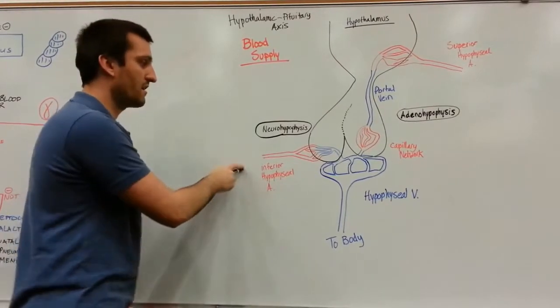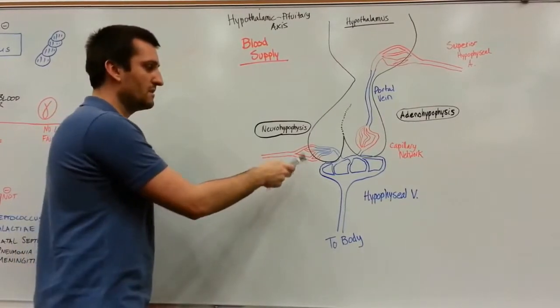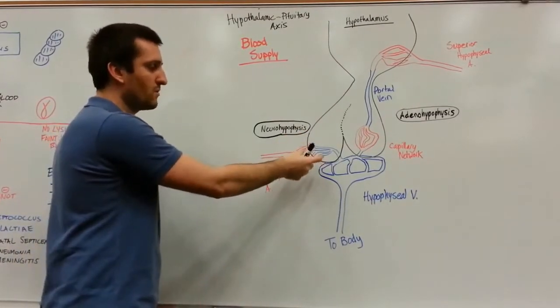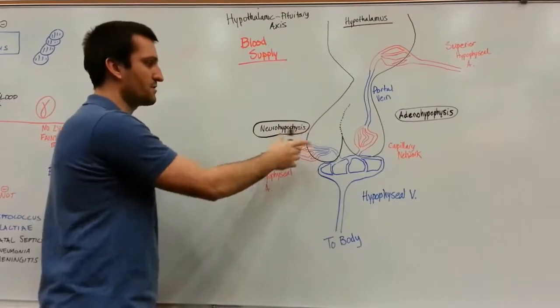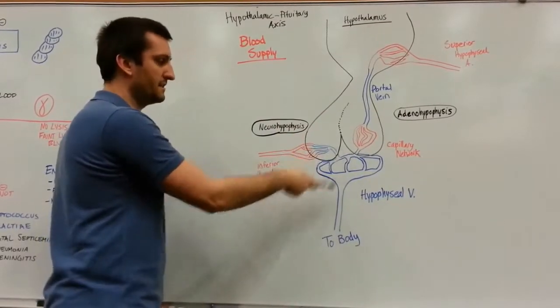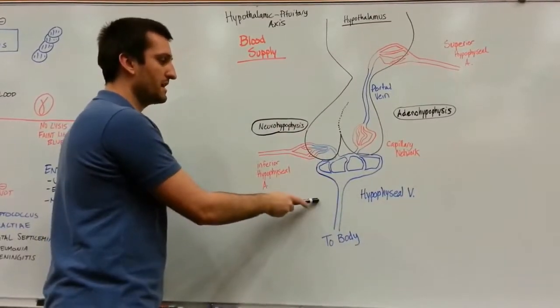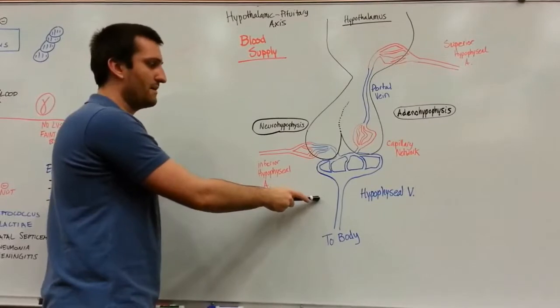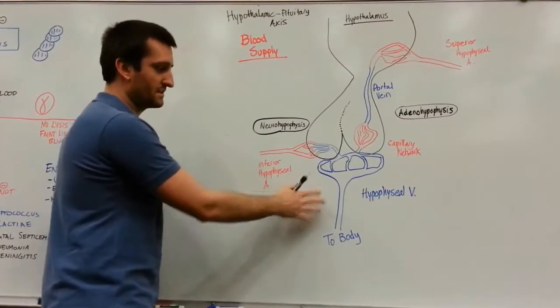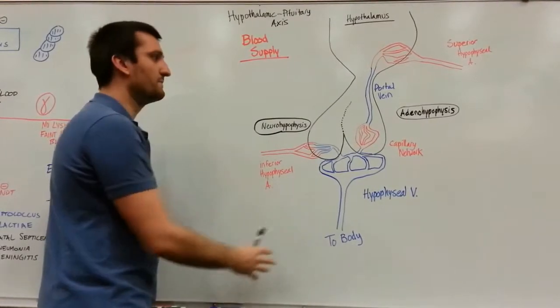That artery is going to come in and collect all the pre-made hormones from the neurohypophysis and then send them into the hypophyseal vein. From the vein, it's going to go to the body.